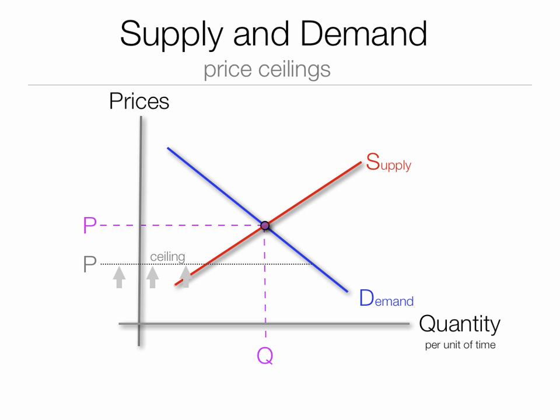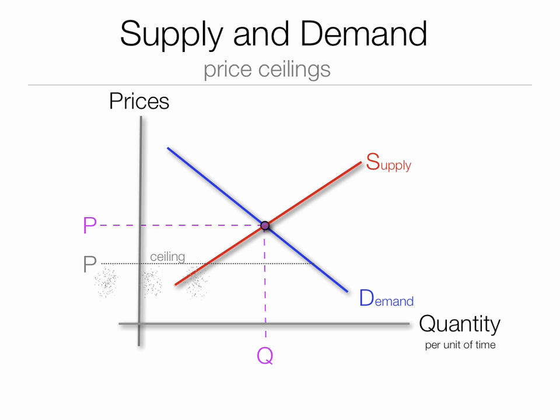There are market forces that want to push that price up, but the government squelches it and tries to smash those market forces. So we have a price that's below the market price. At that price, suppliers are willing to supply quantity supplied, denoted QS, but people want more — that's quantity demanded, denoted QD.